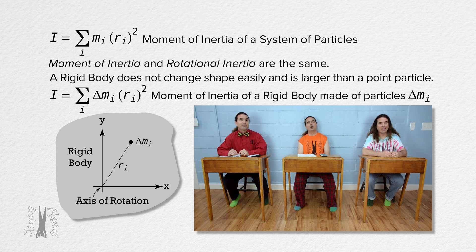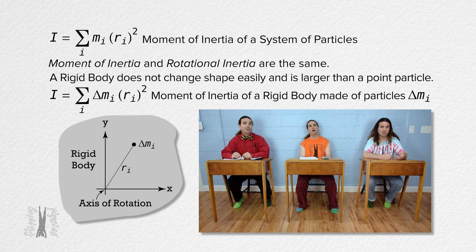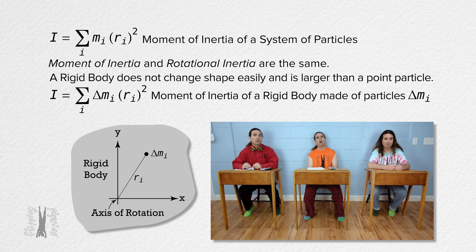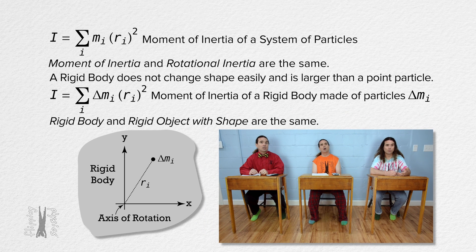And again, we have two names for the same thing: rigid body and rigid object with shape.